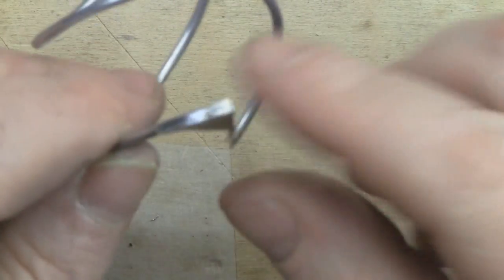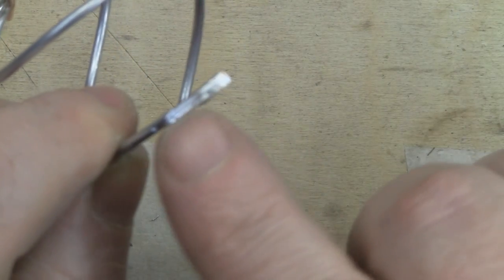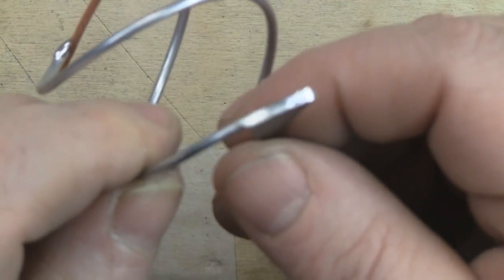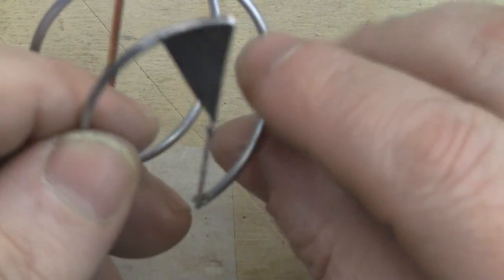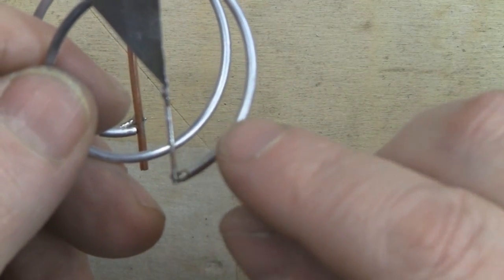I've smoothed it off with the Dremel tool so it matches the curvature of that coil and blends in nicely. Now it's time to do the second one.